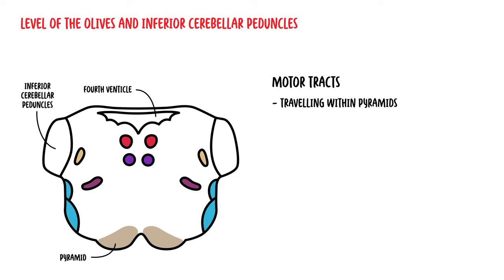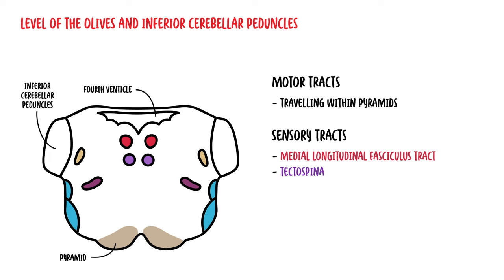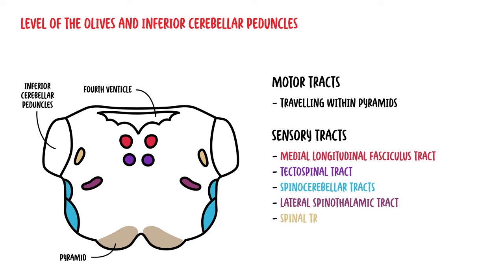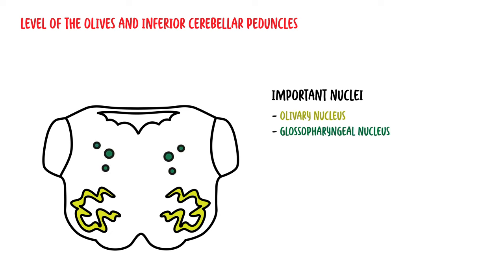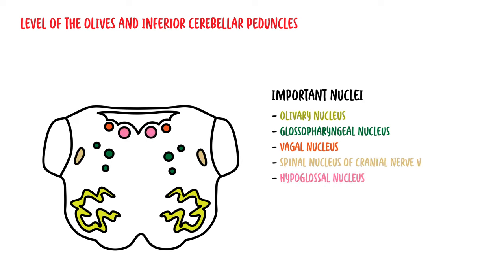There are sensory tracts at this level including the medial longitudinal fasciculus, the tectospinal tract, the spinal cerebellar tract, the lateral spinothalamic tract, and the spinal tract for cranial nerve five. Important nuclei at this level include the olivary nucleus, the glossopharyngeal nucleus, the vagal nucleus, a continuation of the spinal nucleus of cranial nerve five, and a continuation of the hypoglossal nucleus, which is cranial nerve 12.